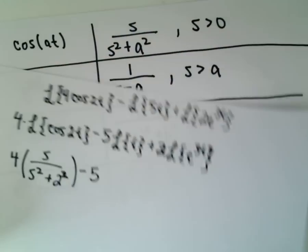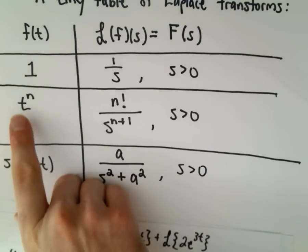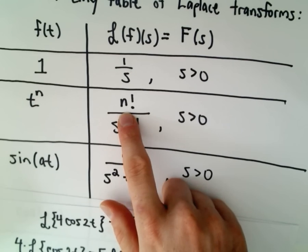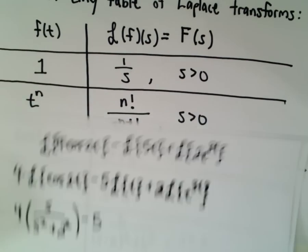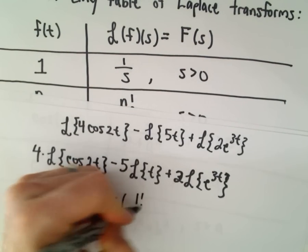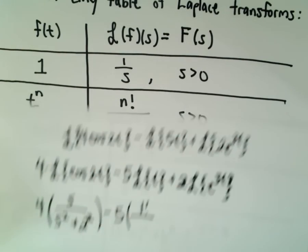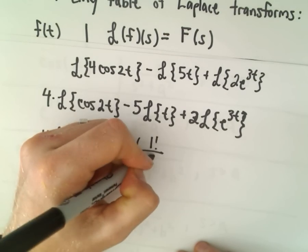Minus 5 times the Laplace transform of t. The Laplace transform of just t to the first power, well you would get 1 factorial which would just be 1. We would get 1 factorial and then s raised to the 1 plus 1, or s squared.